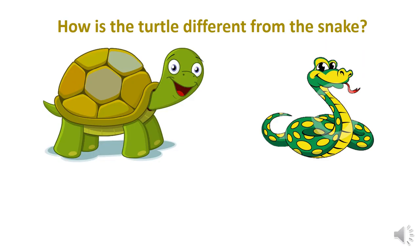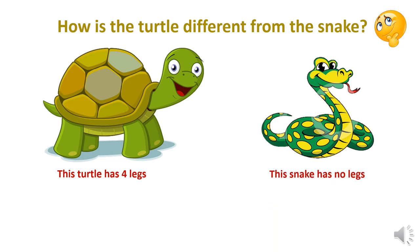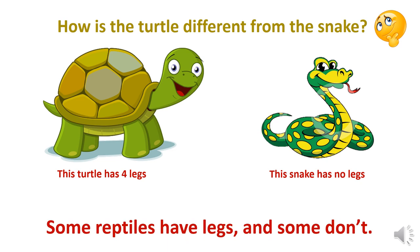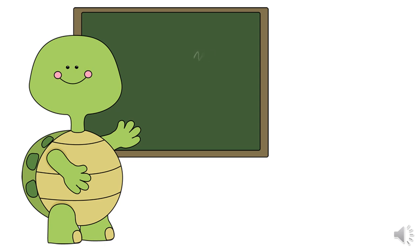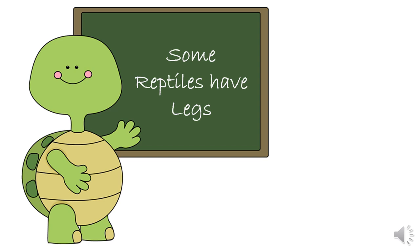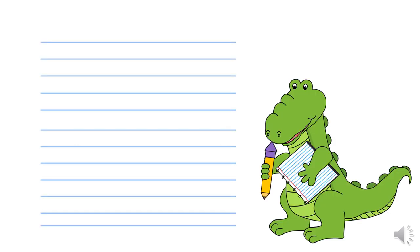Now among reptiles, can you see any differences? For example, how is the turtle different from the snake? How many legs does the turtle have? This turtle has four legs. How about the snake? The snake has no legs. So some reptiles have legs and some don't — this is the third thing we learned about reptiles.